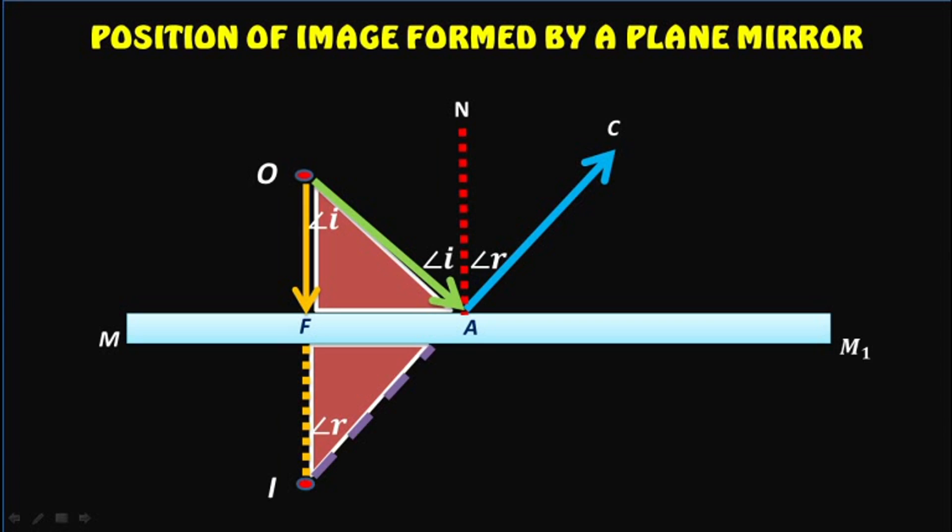Thus, the image is situated on the normal drawn from the object on the mirror, and it is as far behind the mirror as the object is in front of it.